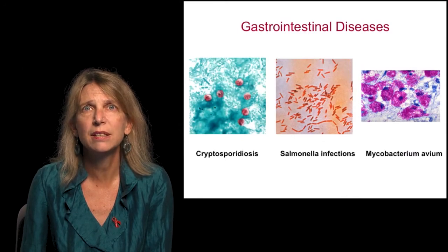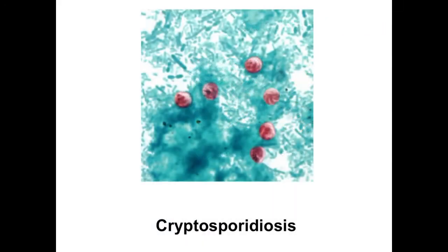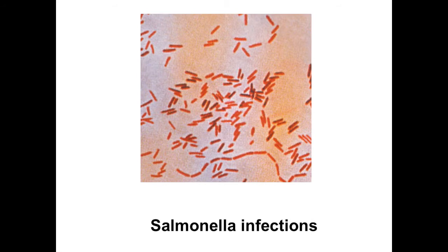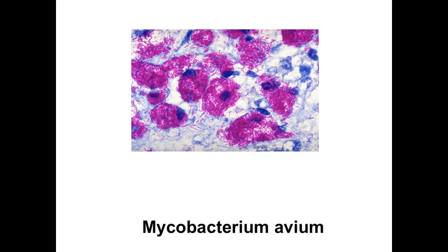There are many gastrointestinal diseases that are AIDS-defining conditions. These include the parasite cryptosporidiosis, which affects the gastrointestinal system and causes profound diarrhea — patients can have as many as 20 to 30 bowel movements per day. Non-typhi salmonella infections, such as Salmonella typhimurium, are also common AIDS-defining conditions and present as fever, diarrhea, and weight loss. Non-tuberculous mycobacterium, such as Mycobacterium avium, occurs in patients with very low CD4 cell counts, presenting with fever and weight loss and massive organ infiltration of mycobacteria.